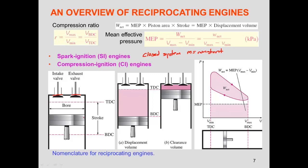The piston moves between two limits. The furthest upward position is called the top dead center — it cannot go further because we need space for tolerances and for the valves to open and close. The lowest point the piston can reach is the bottom dead center, which defines the maximum downward displacement. The difference between these two positions is what we call the stroke — the vertical distance the piston travels.